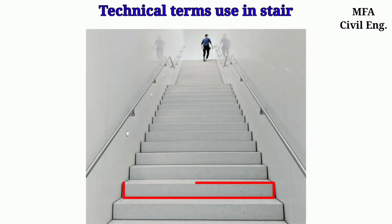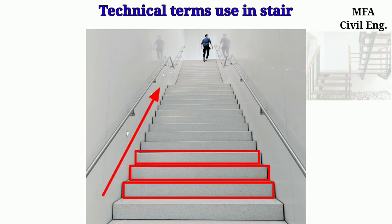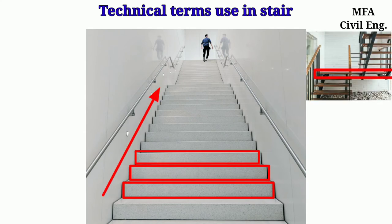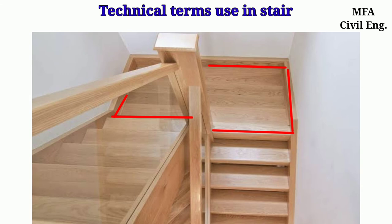The continuous series of steps in one direction, separated by a horizontal platform or winders, is called the flight. The horizontal platform provided at the top of the flight is called the landing.